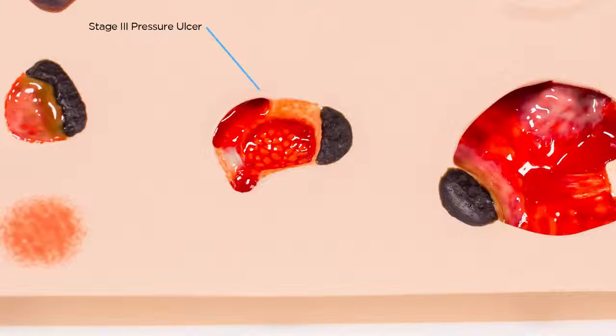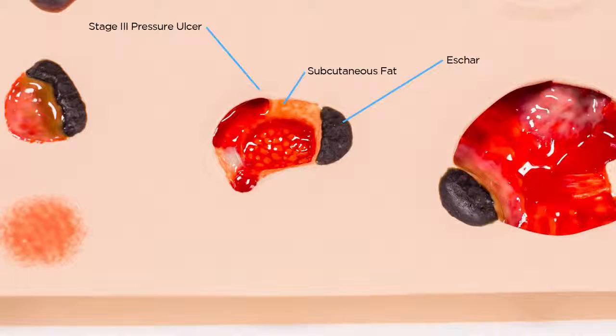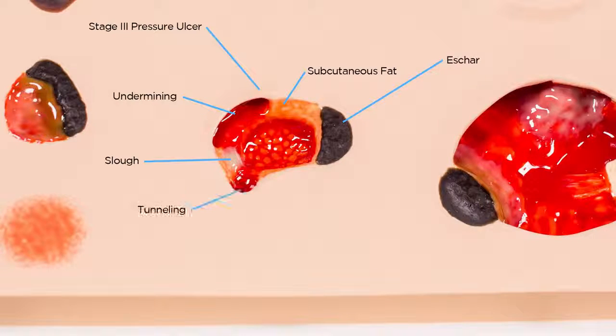Following the stage 2 wound is a stage 3, displaying eschar, subcutaneous fat, slough, undermining, tunneling, and granulation tissue.